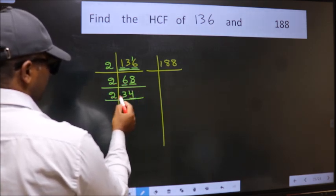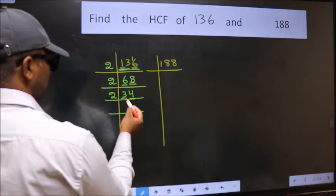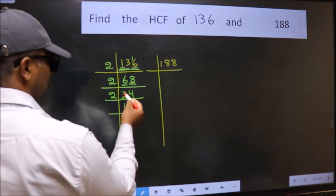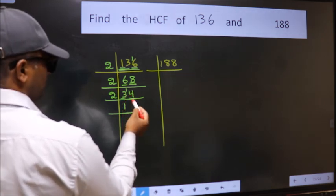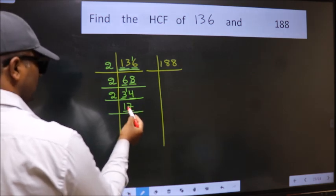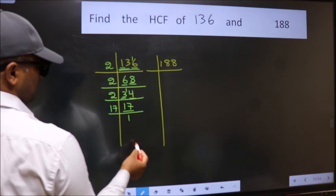Last digit 4, it's even, so take 2. First number 3. A number close to 3 in 2 table is 2×1 is 2. 3 minus 2 is 1, 1 carried forward 14. When do we get 14 in 2 table? 2×7 is 14. 17 is a prime number, so 17×1 is 17.